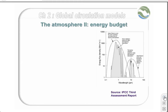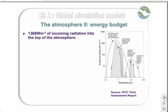According to the Stefan-Boltzmann equations, the energy hitting the top of the atmosphere is inversely proportional to the square of the distance from the Sun. At 150 million kilometres, the top of the atmosphere receives 1,368 watts per square metre, as measured by satellites.